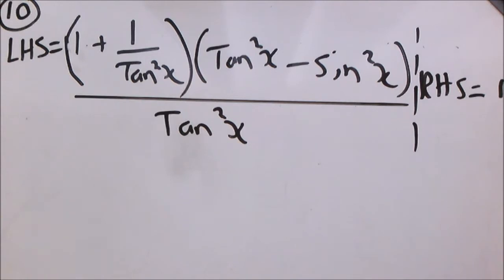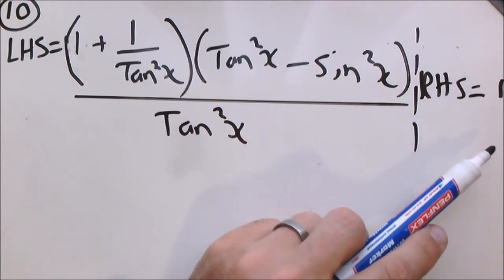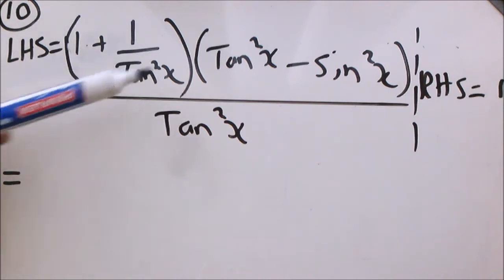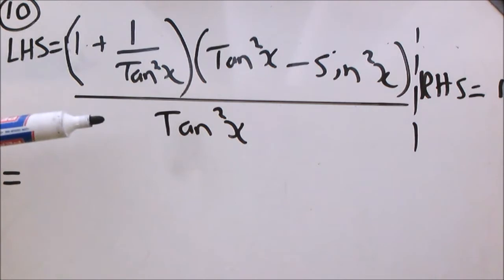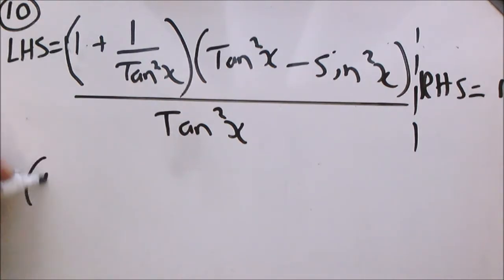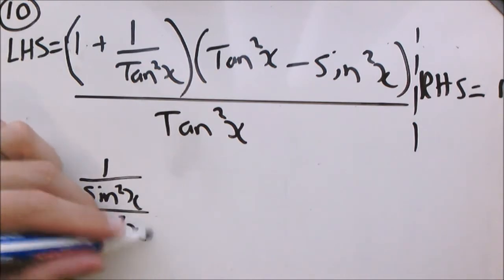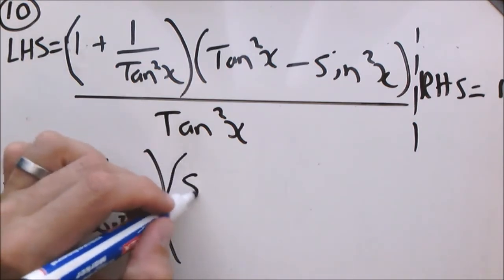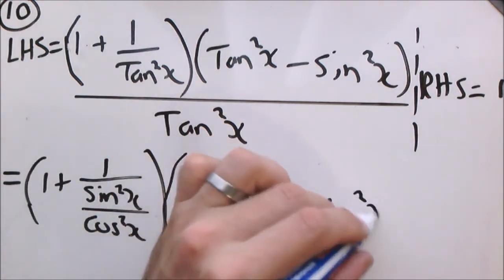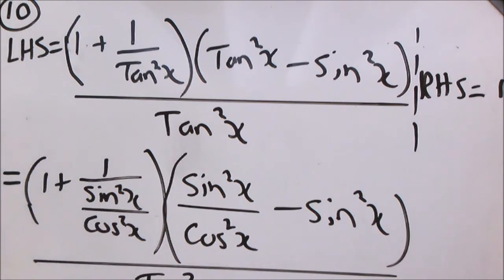Let's have a look at number 10. It does look intimidating, but like many things in mathematics, the answer is equal to 1. I see tan squared x, tan squared x, tan squared x — all of them can be rewritten in terms of sin squared x and cos squared x, and there's a sin squared x as well. So that's definitely what I'm going to do. This becomes 1 plus sin squared x over cos squared x, times sin squared x over cos squared x minus sin squared x, all divided by tan squared x. I'm just going to leave the tan squared x as is for now.